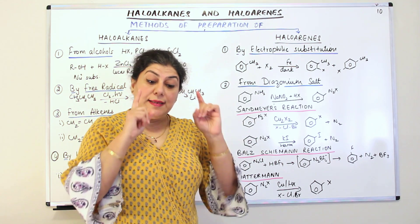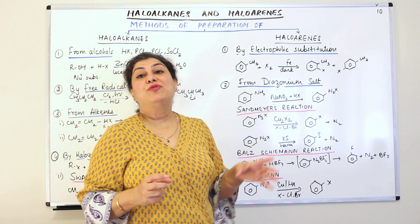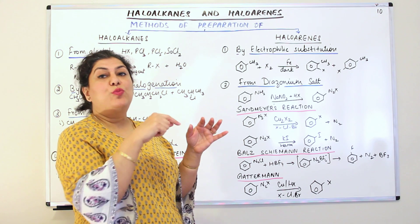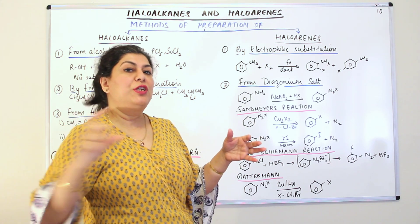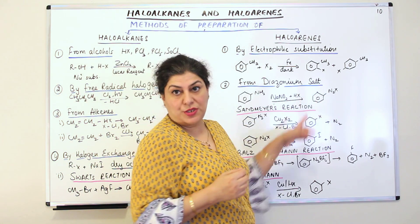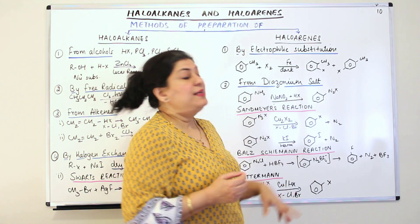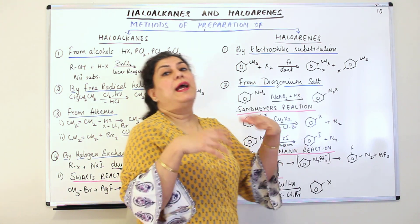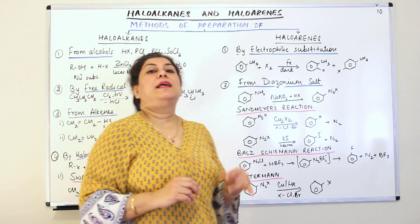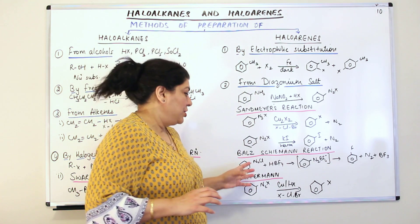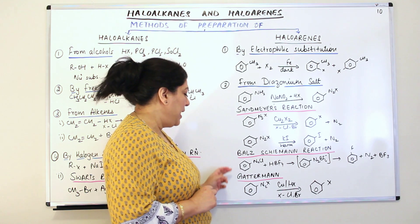The second method of preparation of haloarenes is from diazonium salts. When you have a benzene ring to which N2X has been added, that salt is known as a diazonium salt — 'diazonium' referring to the two nitrogens. You take an amine and react it with sodium nitrite and a halogen acid to get benzene diazonium halide — benzene diazonium chloride or bromide, for example.